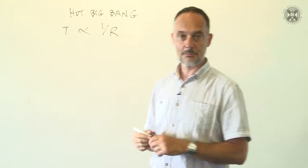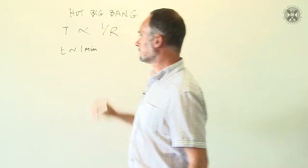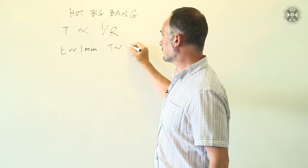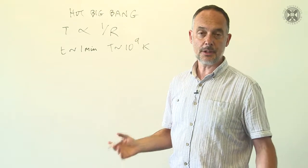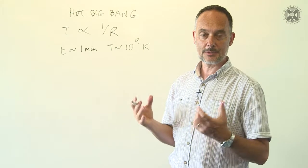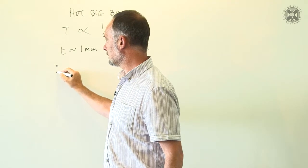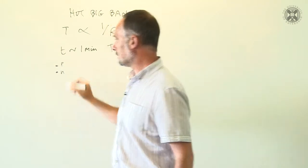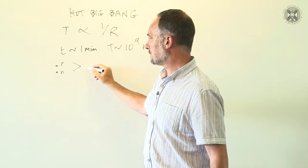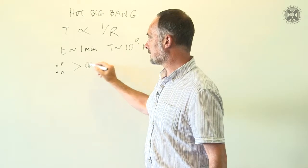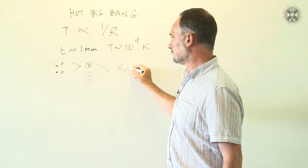So when the universe is about one minute old, the temperature is about a billion degrees. This means that nuclear reactions can happen. So nuclei can be assembled. At higher temperatures, they couldn't survive. So you have individual protons and neutrons. But as the universe cools below this threshold, these can come together to make a deuterium nucleus. And two deuterium nuclei can come together to make helium.